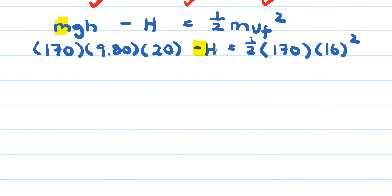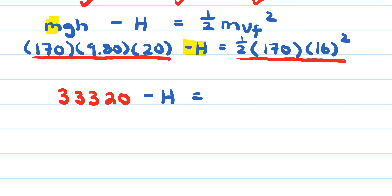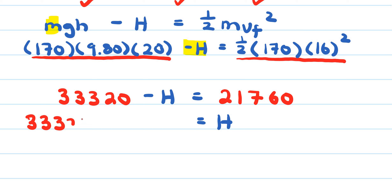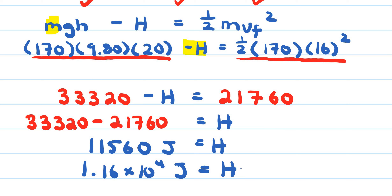Computing: 170 × 9.80 × 20 = 33,320 joules. The kinetic energy at the end: ½ × 170 × 16² = 21,760 joules. Solving for heat energy: Q_heat = 33,320 − 21,760 = 11,560 joules, or approximately 1.16 × 10⁴ joules of heat energy.